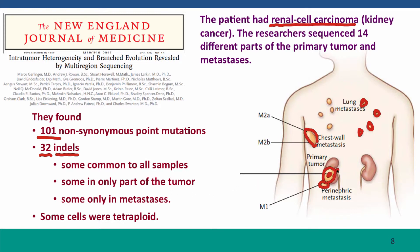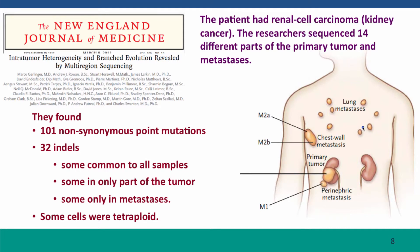Some mutations were only in part of the tumor, representing sectors that grew from particular new mutants. Some were only in the metastases. Some of the cells in the tumors were tetraploid — they had 4 copies of all their chromosomes — so they clearly had a cell division that had totally failed. And many of these mutations are likely to be partly responsible for the increased cell growth of the tumor cells.